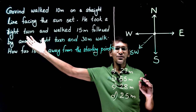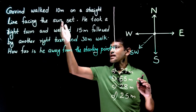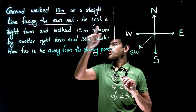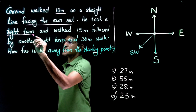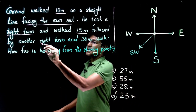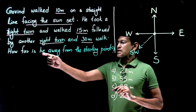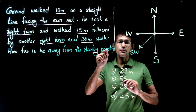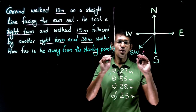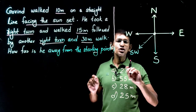The next question: Govind walked 10 meters on a straight line facing the sunset. He took a right turn and walked 15 meters, followed by another right turn and a 30-meter walk. How far is he from the starting point? Rather than wasting time reading several times, we go straight into drawing the diagram.